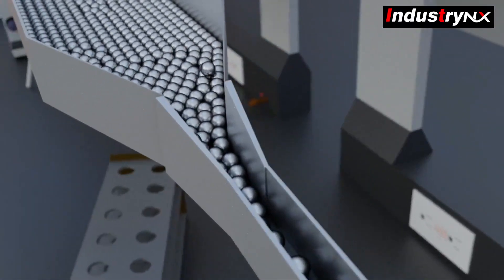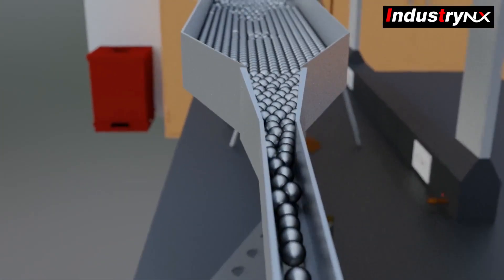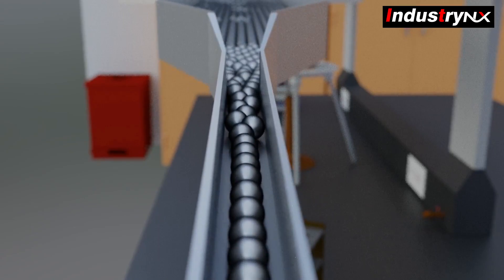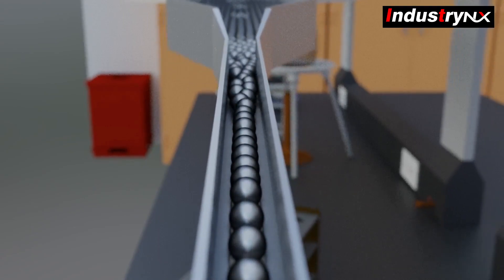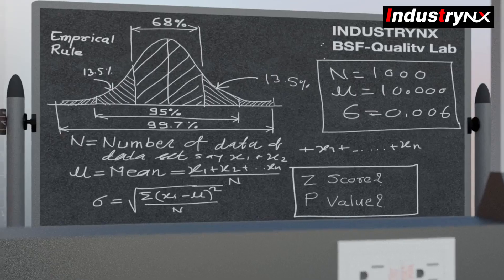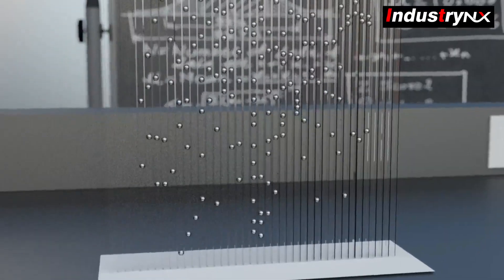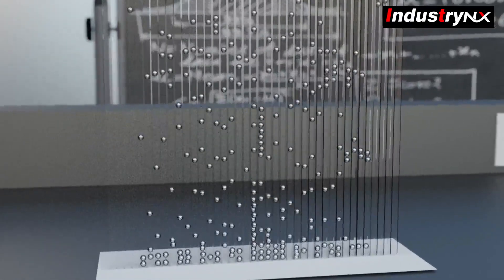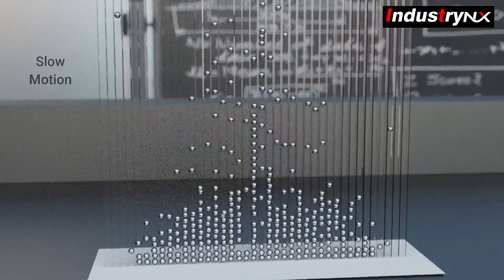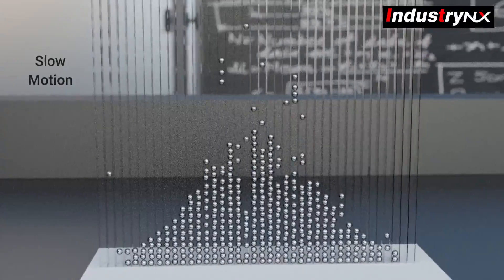Since all balls are manufactured on a single machine, single setting, and by the same operator, Michelle can predict the data of 100,000 balls based on sample inspection data, and also conclude what percentage of rejection exists in the batch — and can take a call with his manager John.